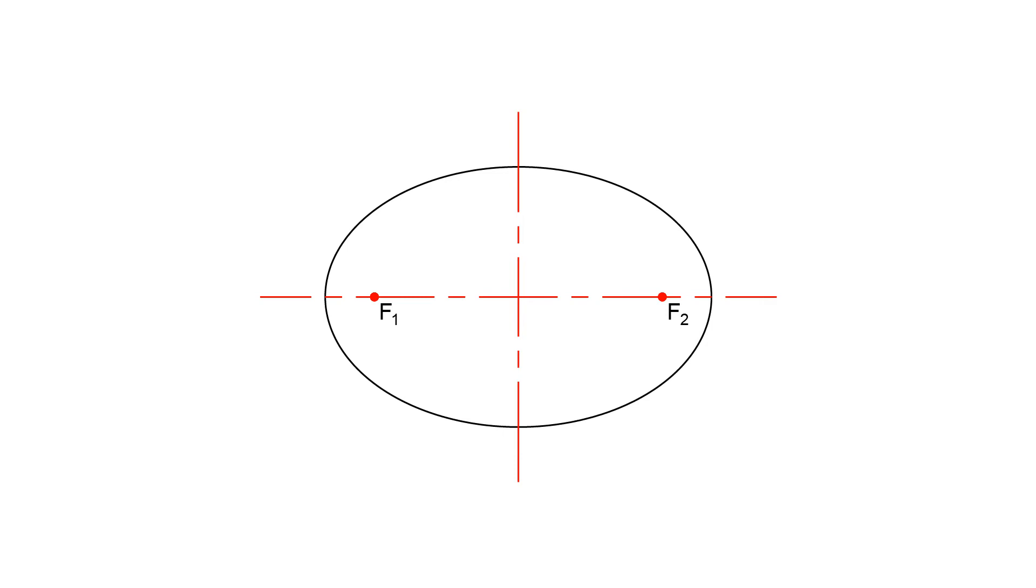The focal points are useful if we need to draw a normal or a tangent to the ellipse. Let us see how to do that. Suppose we need to draw a normal at a given point on the ellipse, point P.